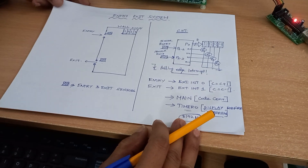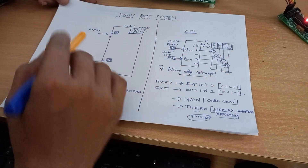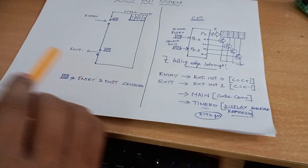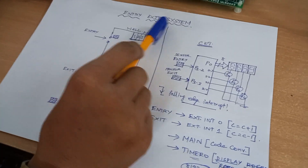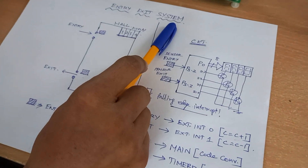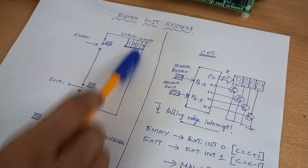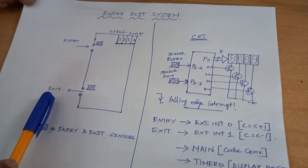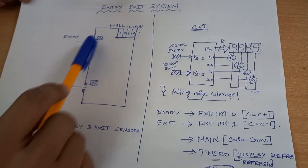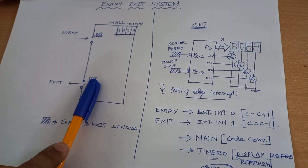Hello everyone. In this presentation we are going to discuss the entry and exit system. For example, there is a hall with an entry sensor and an exit sensor placed at the entrance and exit.